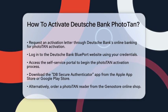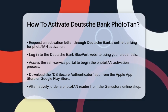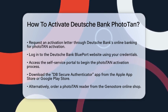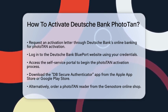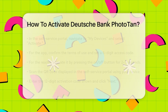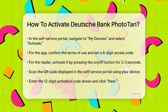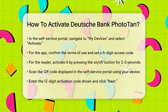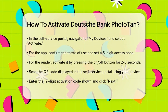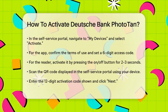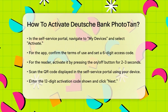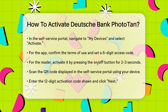To activate the PhotoTAN app, you need to download and install the DB Secure Authenticator app from the Apple App Store or Google Play Store. If you prefer, you can also use a PhotoTAN reader, which you can order from the Genestore online shop.